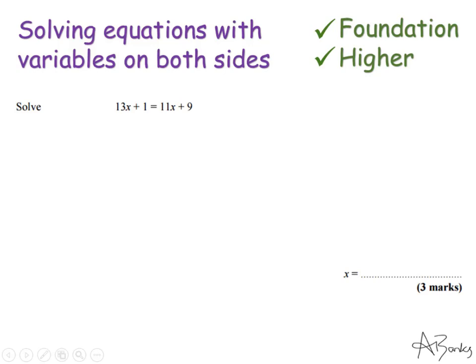I can do either one of these things, but the sensible thing here would be to subtract the 11x so that I don't go into negatives. So I'm going to take away 11x from both sides.